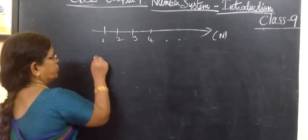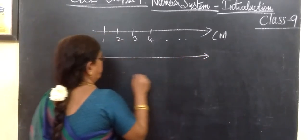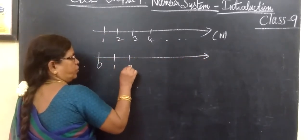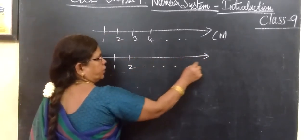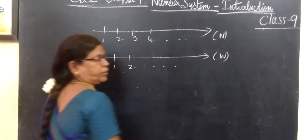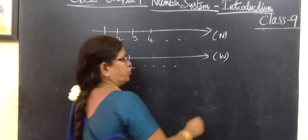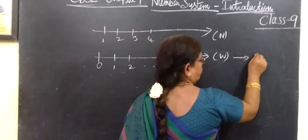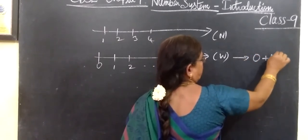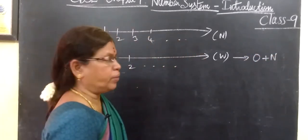The whole numbers start from 0, then 1, 2, 3, etc., and it is represented by W. Whole number is the union of 0 and the natural numbers.